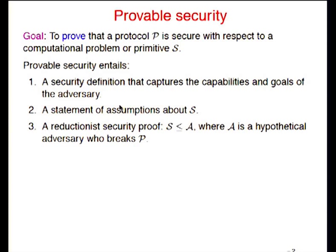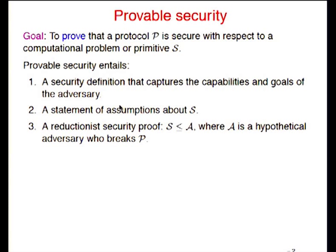This is a talk about provable security. The goal of provable security is to prove that a protocol P is secure with respect to some computational problem or primitive S. This process usually has three steps: a security definition which accurately captures the goals of the adversary and its capabilities, a statement about the assumptions of the hard problem or primitive, and a reduction or security proof which uses a hypothetical adversary A to construct an algorithm that breaks the hard problem.